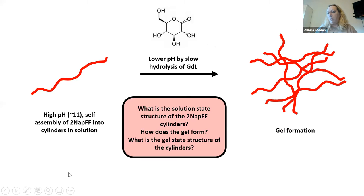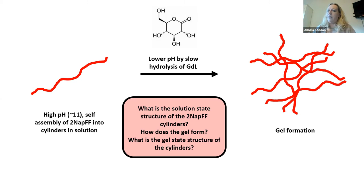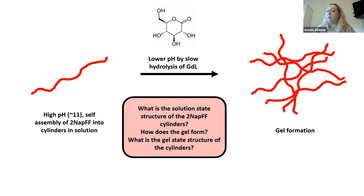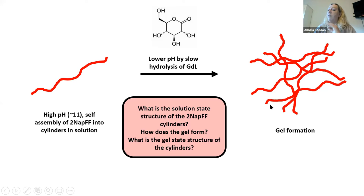I'm going to ask some fundamental questions when doing this experiment. Starting with a high pH self-assembled solution of 2NAPFF cylinders: what is the solution state structure of these cylinders? How can contrast matching help us understand the molecular self-assembly? Then I'm going to add glucono-delta-lactone (GDL), which hydrolyzes very slowly and releases protons into solution, dropping the pH homogeneously to form a very nice homogeneous gel. The second question: how does this gelation process occur? And the final question: when we reach the gel state, is it the same cylinder we started with, or has there been a structural transformation during gelation?